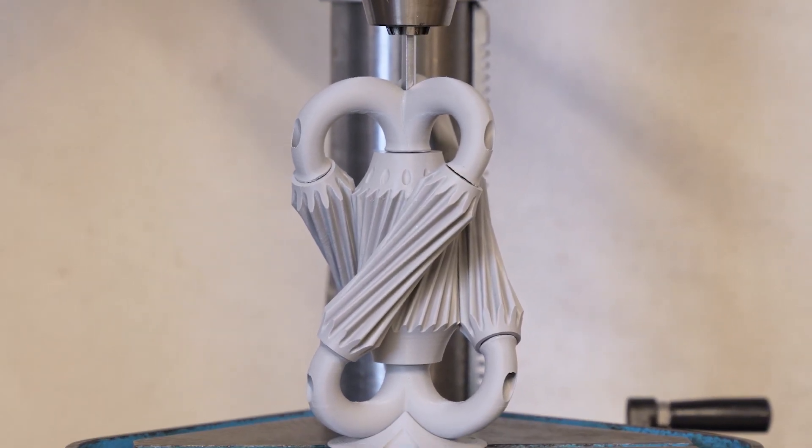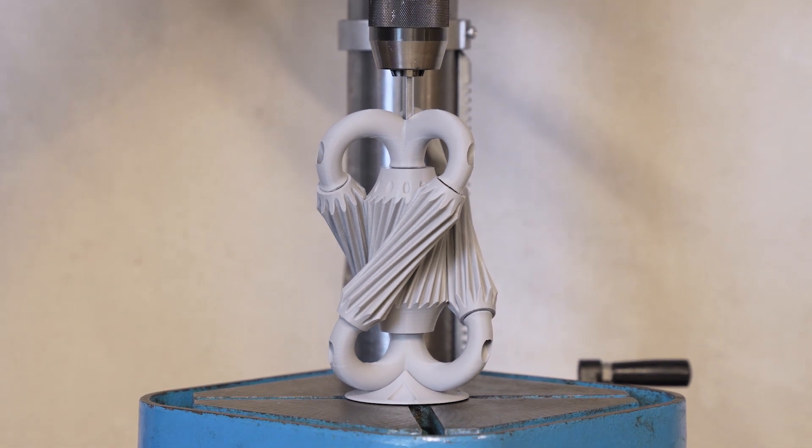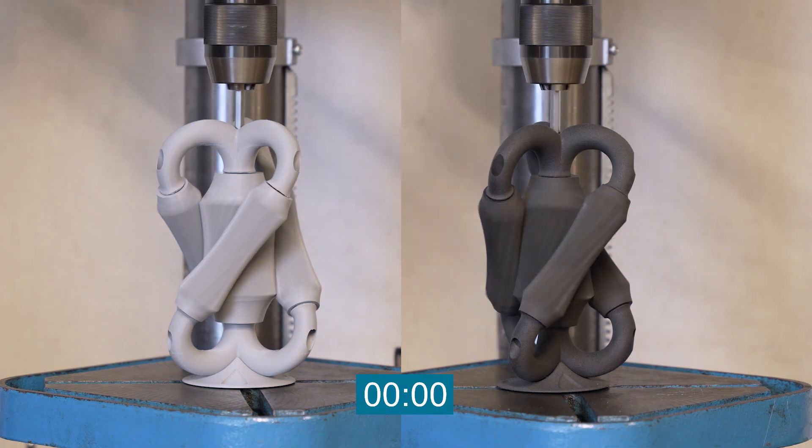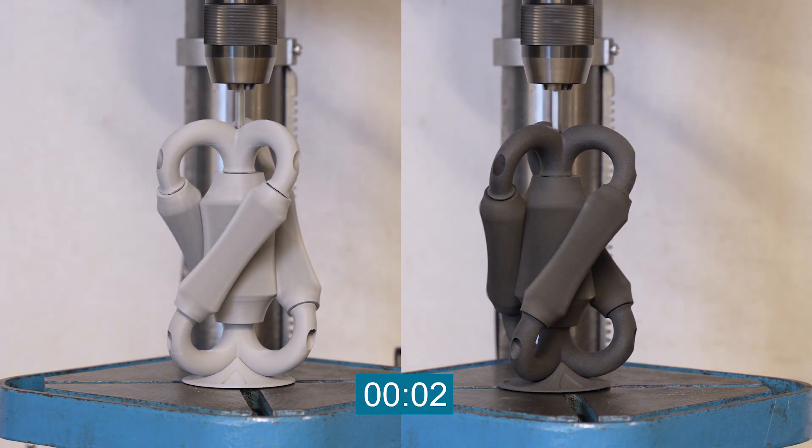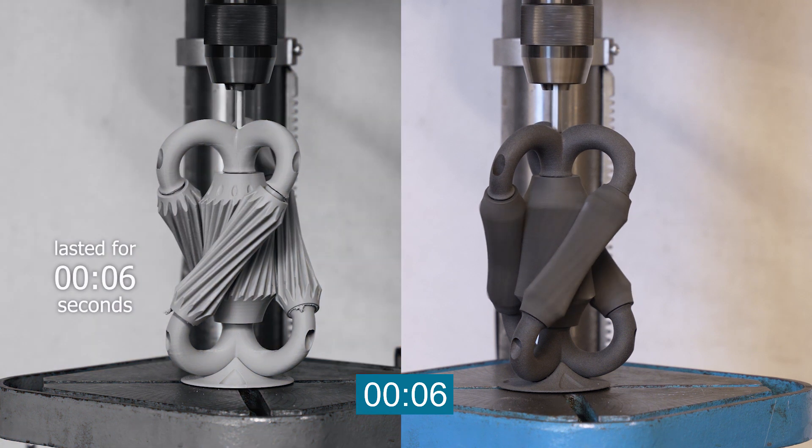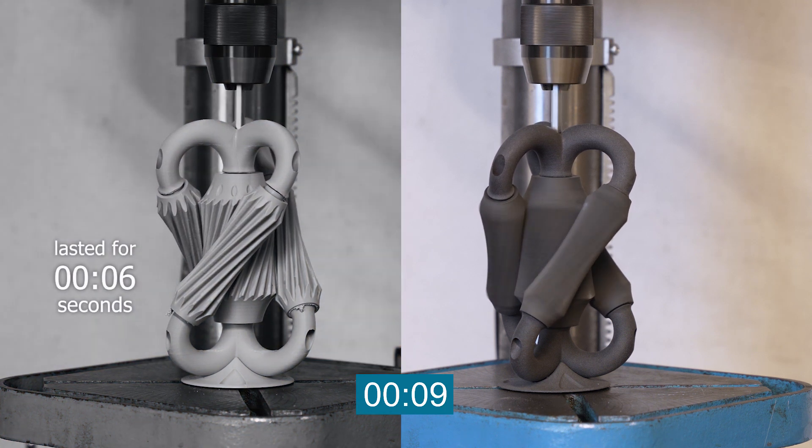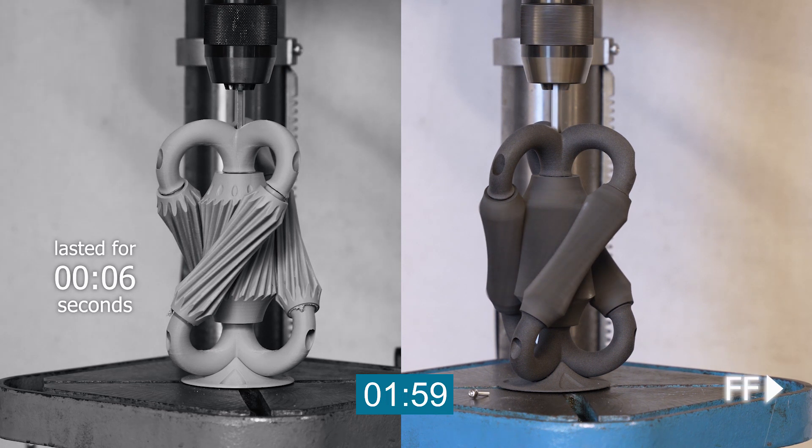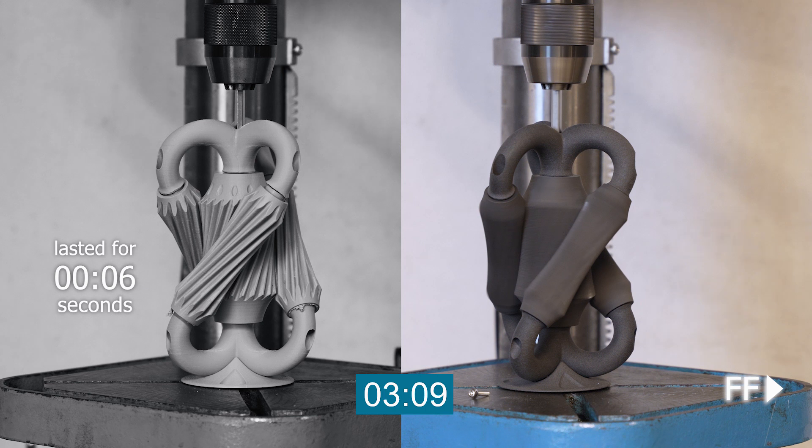We fixed the gears onto the work surface, connected the central element to the drill with a hex key and began our test. After just about 6 seconds the FDM part stopped working with the drill only spinning loosely. The SLS part however continued to spin and after 5 minutes of no change we decided to stop the test.